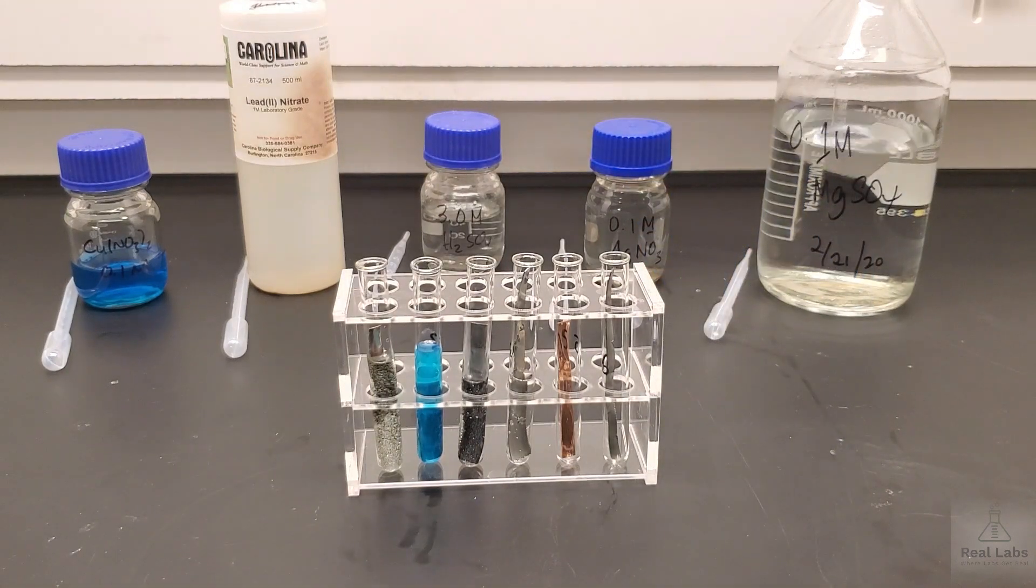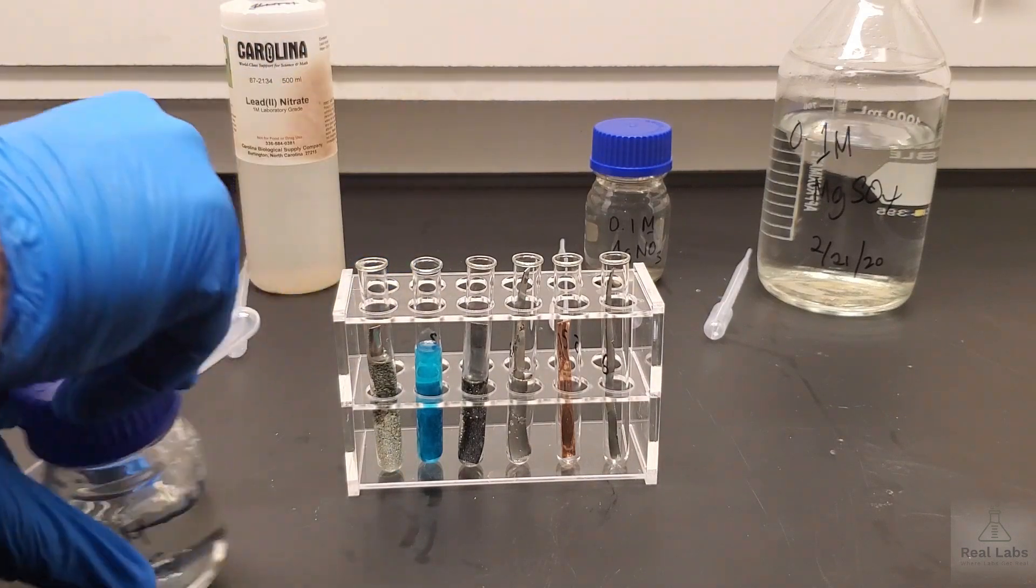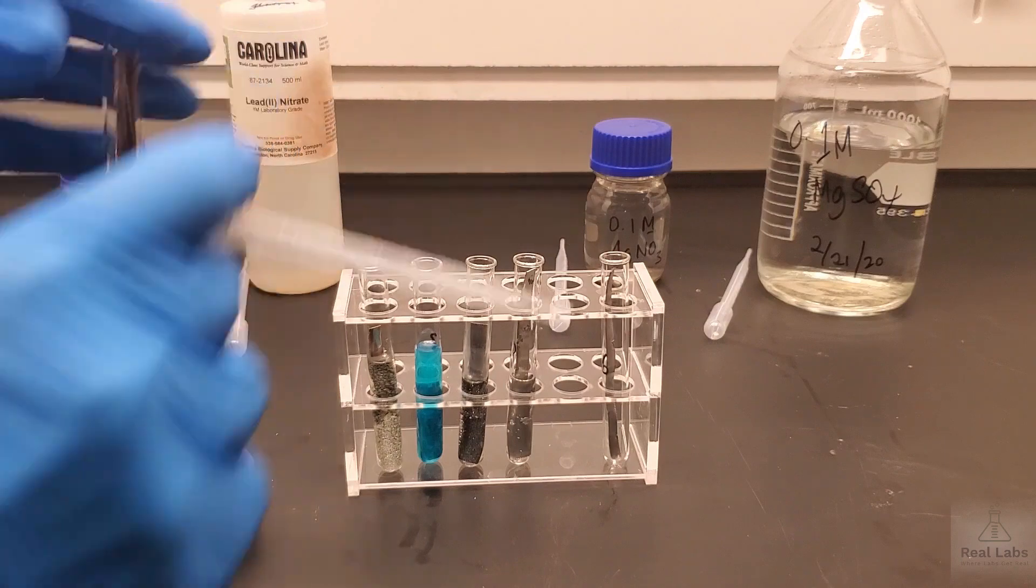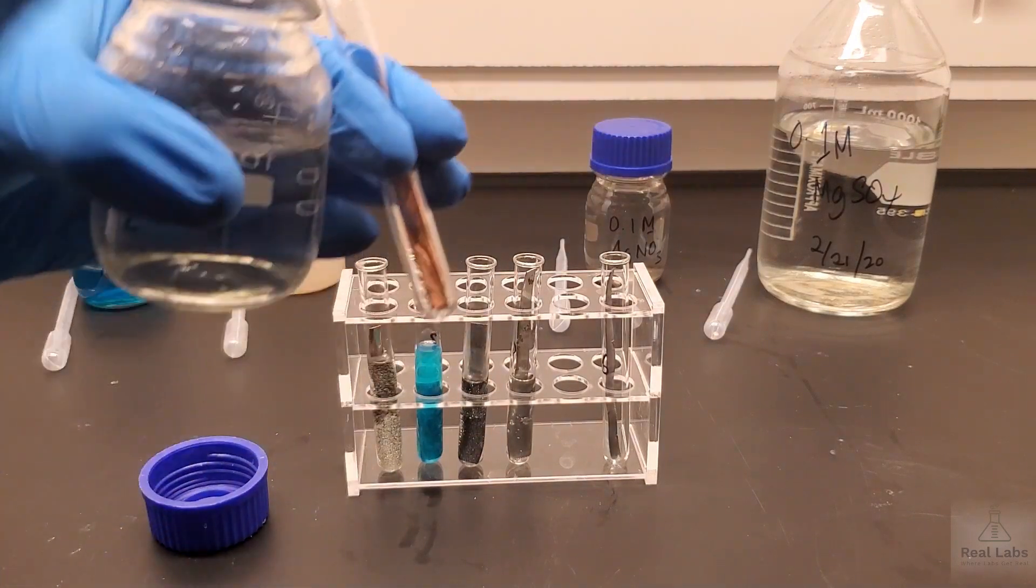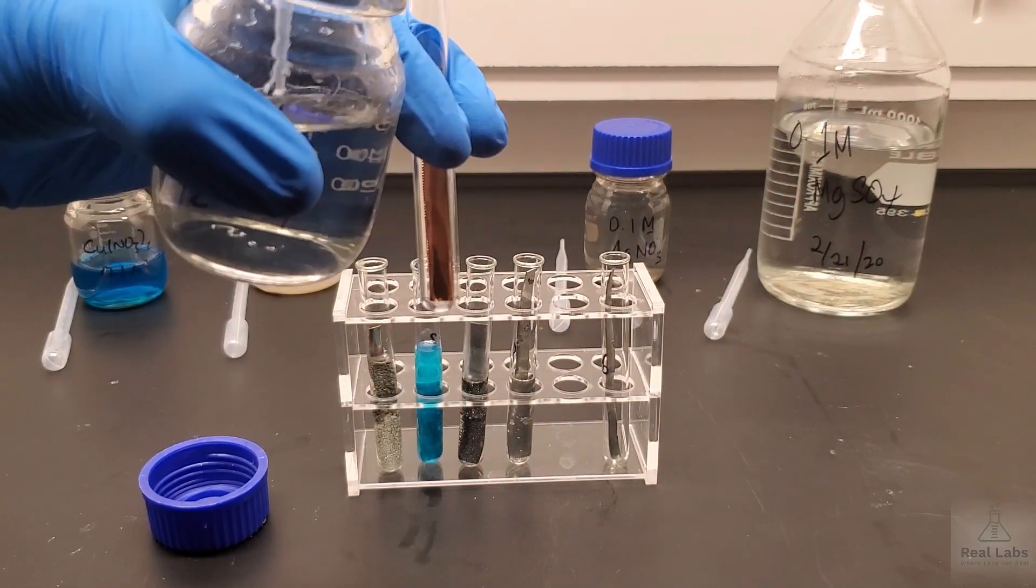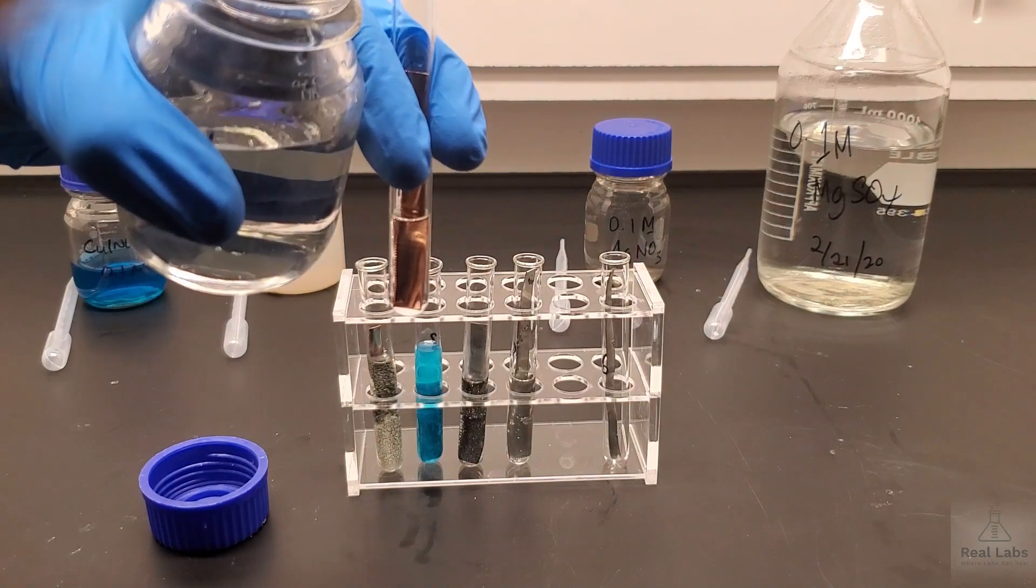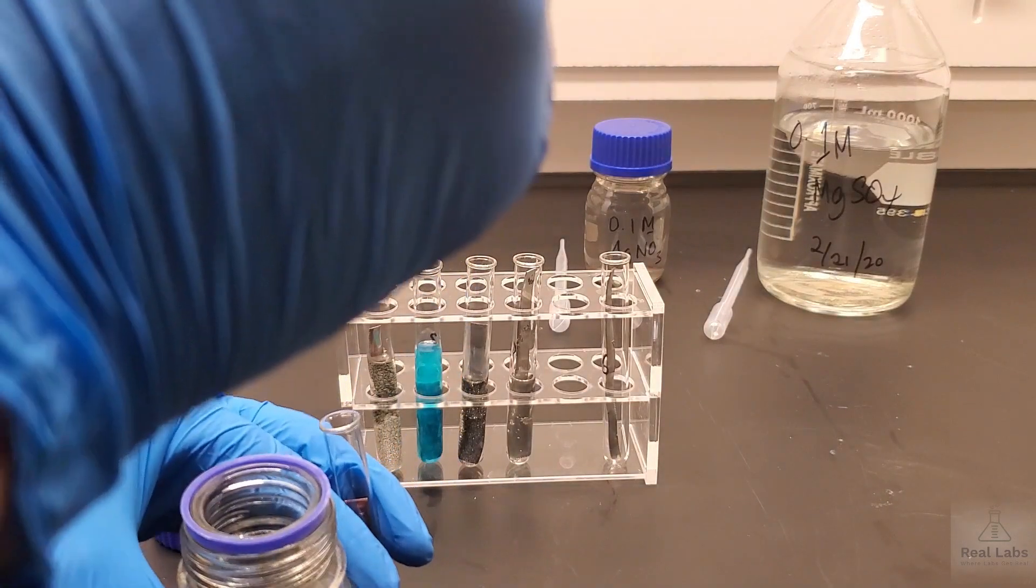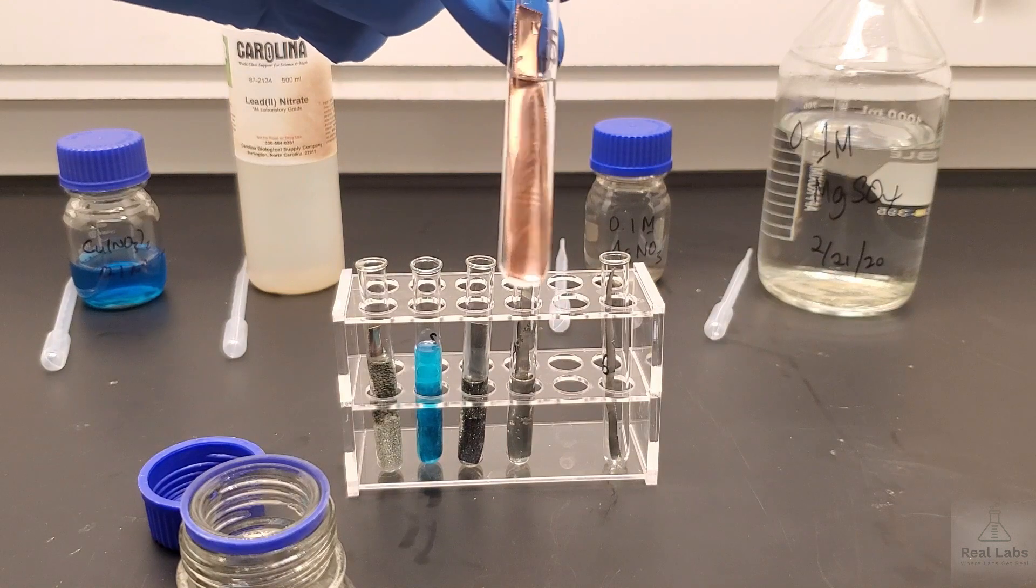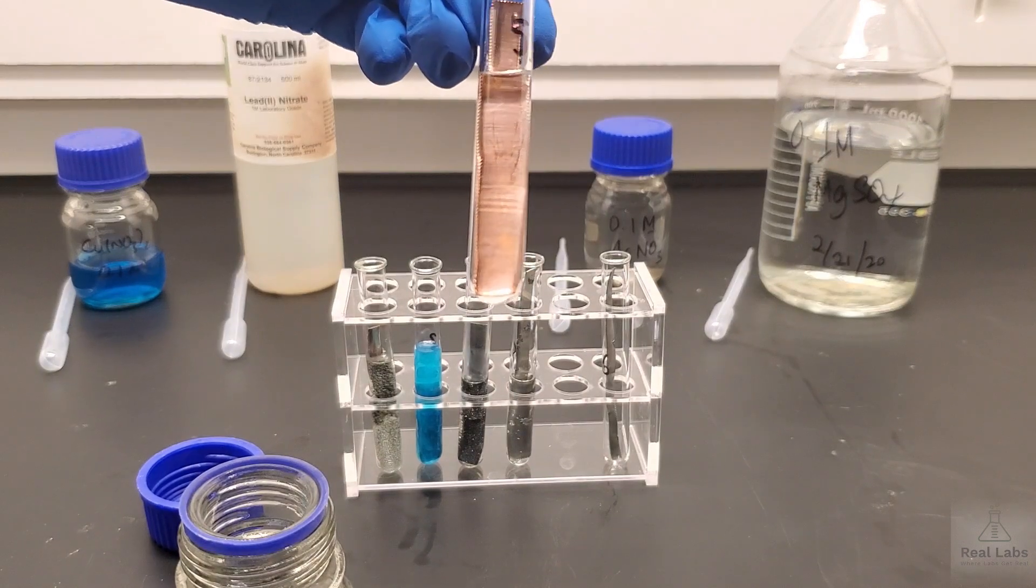In the fifth one we have the copper strip. We're going to add 3M sulfuric acid to that one. Just like before we're going to about half fill this with the 3M sulfuric acid. We'll see if we can see anything happening at the same time. Looks nice and shiny underneath. We'll bring that into shot so you can see if anything's going on. Still looks pretty shiny underneath. Not seeing any real effervescence of any kind in there. We're going to let that go for a little while.